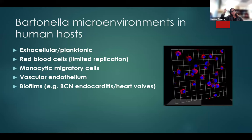The Bartonella microenvironments in human hosts need to be replicated in vitro for antibiotic susceptibility testing. These include: the extracellular planktonic environment, red blood cells where they have limited replication, monocytic migratory cells and vascular endothelium, and finally, biofilms.